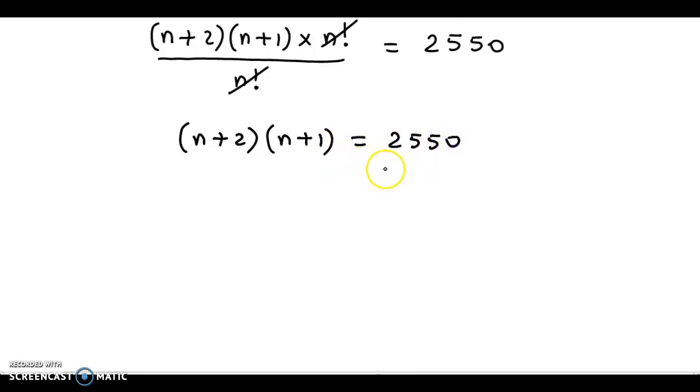Now, this is a very interesting arrangement if you see. Here, we have two factors in descending order with a difference of 1. There is a difference of 1 in these two factors and they are written in descending order. Likewise, we can have a similar arrangement on the right hand side. See, 2550 could be factorized as 51 into 50.